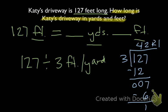With a mixed measure, our quotient is going to be our next unit. So 42 is going to be the number of yards. There are 42 yards. And the remainder is our original unit. So we have 1 foot since our original unit was feet. So as a mixed measure, Katie's driveway in yards and feet is 42 yards and 1 foot.